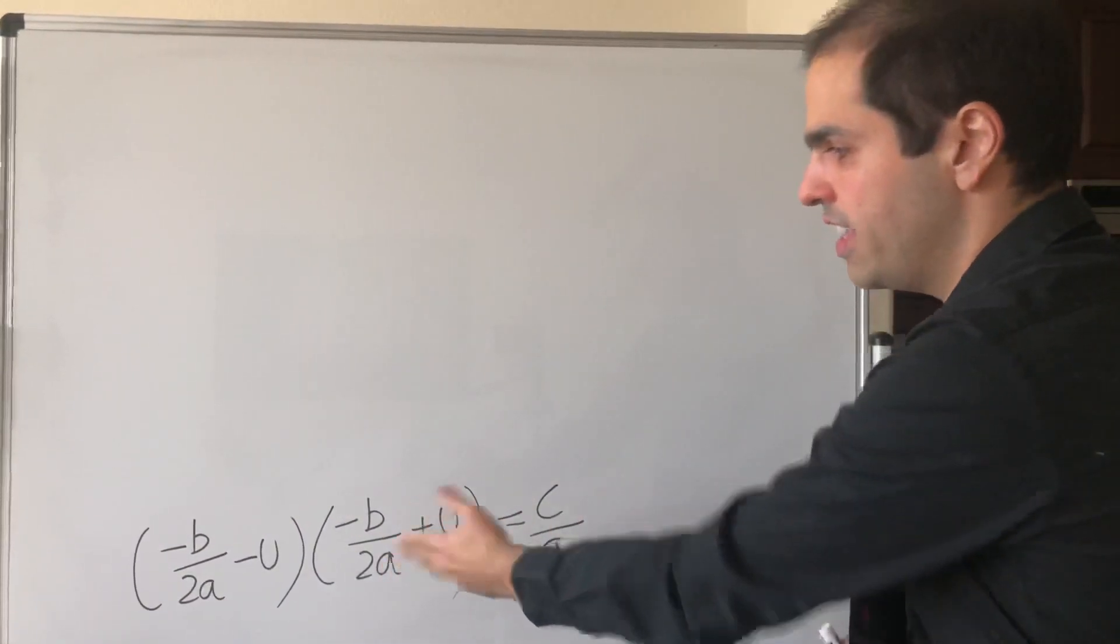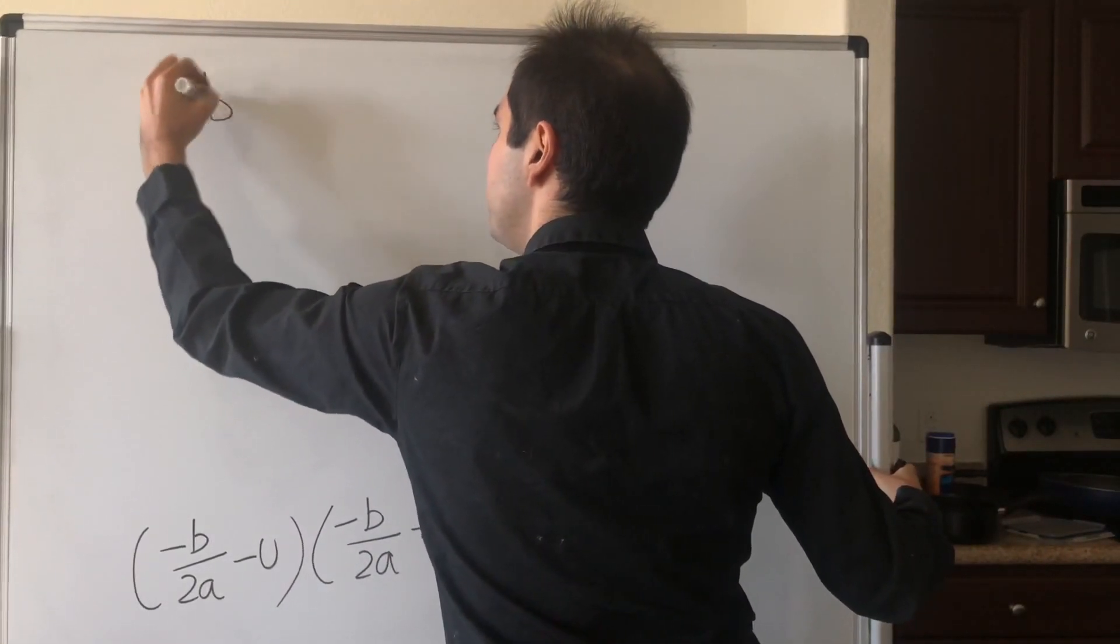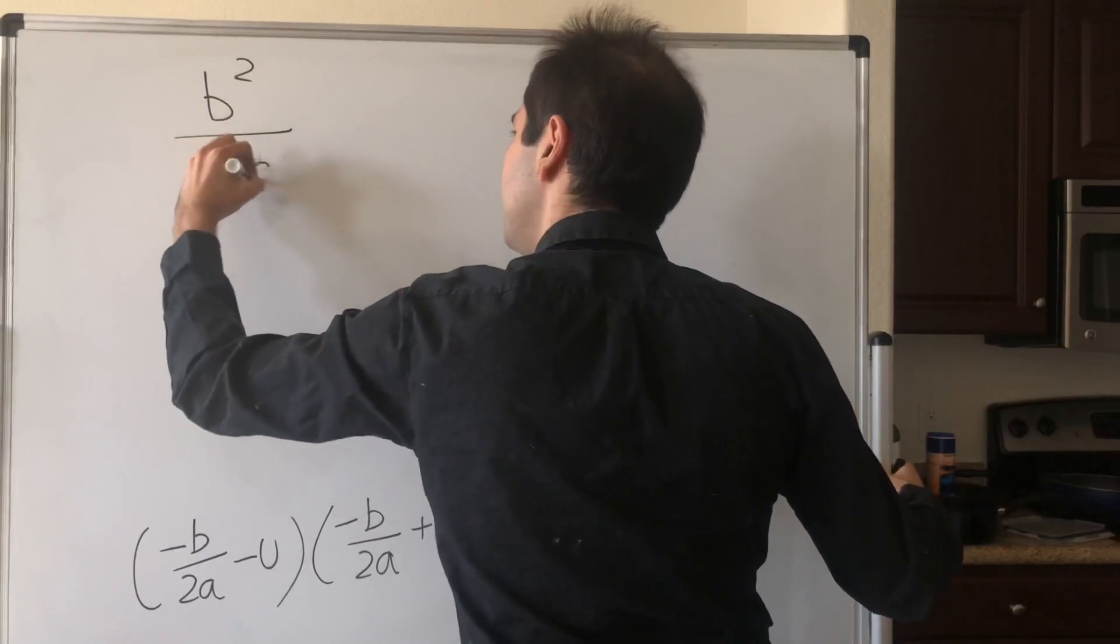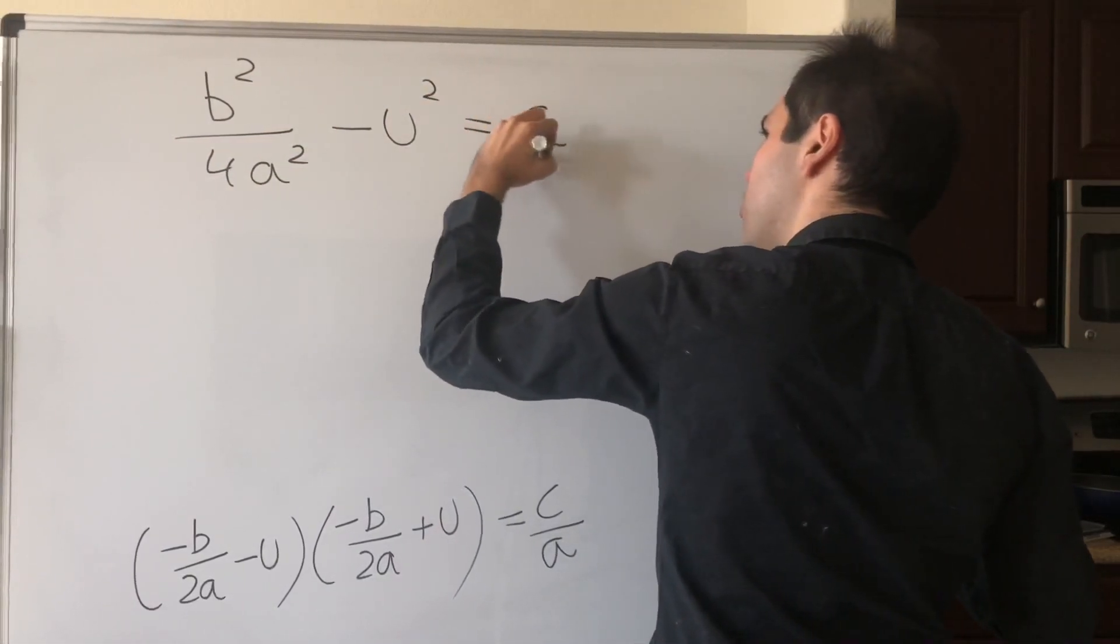If you expand that out, you get (-b/2a)². So b²/4a² - u² = c/a.